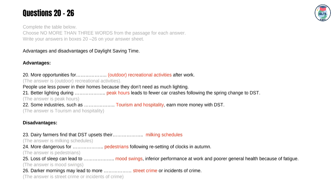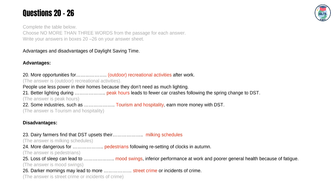Disadvantages: 23 — Dairy farmers find that DST upsets their milking schedules. The answer is: milking schedules. 24 — More dangerous for pedestrians following resetting of clocks in autumn. The answer is: pedestrians. 25 — Loss of sleep can lead to mood swings, inferior performance at work and poorer general health because of fatigue. The answer is: mood swings. 26 — Darker mornings may lead to more street crime or incidents of crime. The answer is: street crime or incidents of crime.